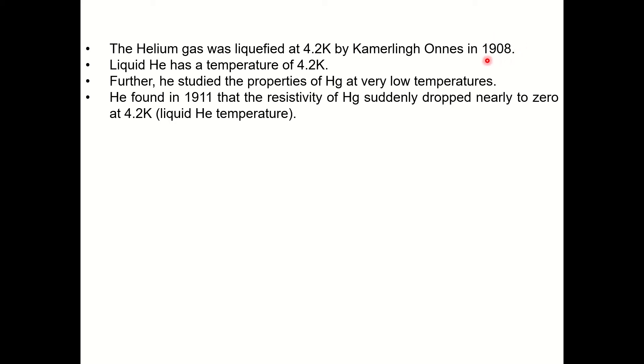He found in 1911 that the resistivity of mercury suddenly drops nearly to zero at 4.2 Kelvin. At this temperature the resistivity of mercury was of the order of 10 raise to minus 5 times less than its normal resistivity. So the conductivity definitely increases by 10 raise to 5 times.